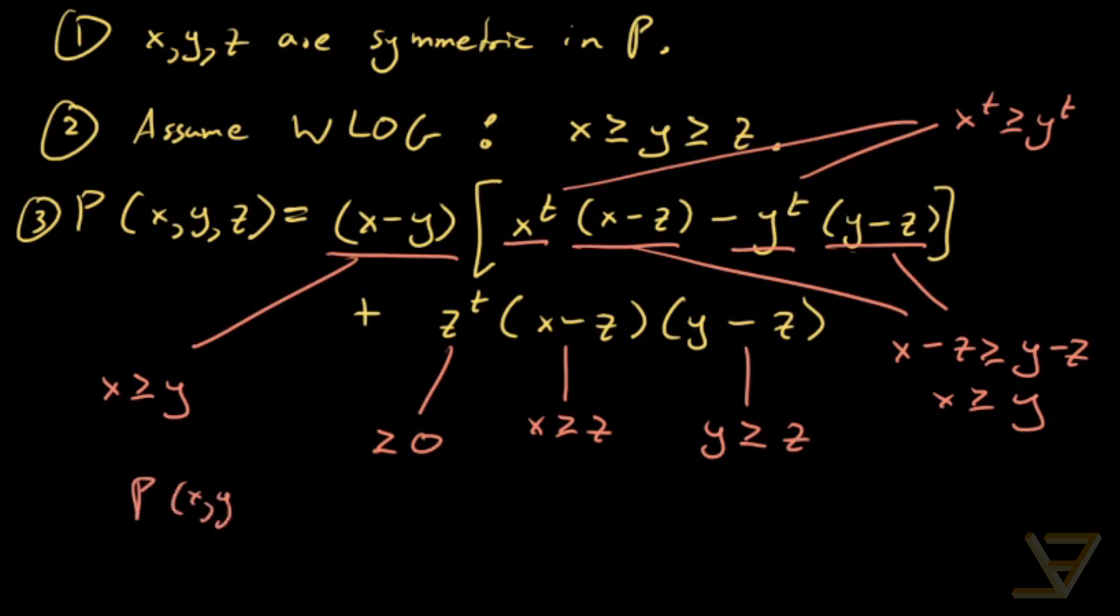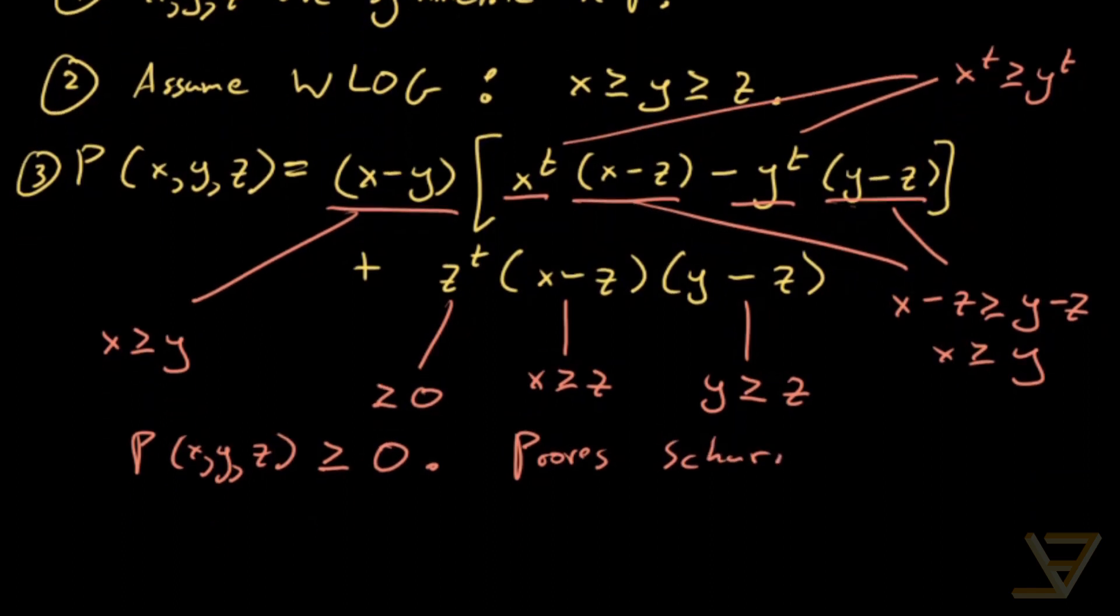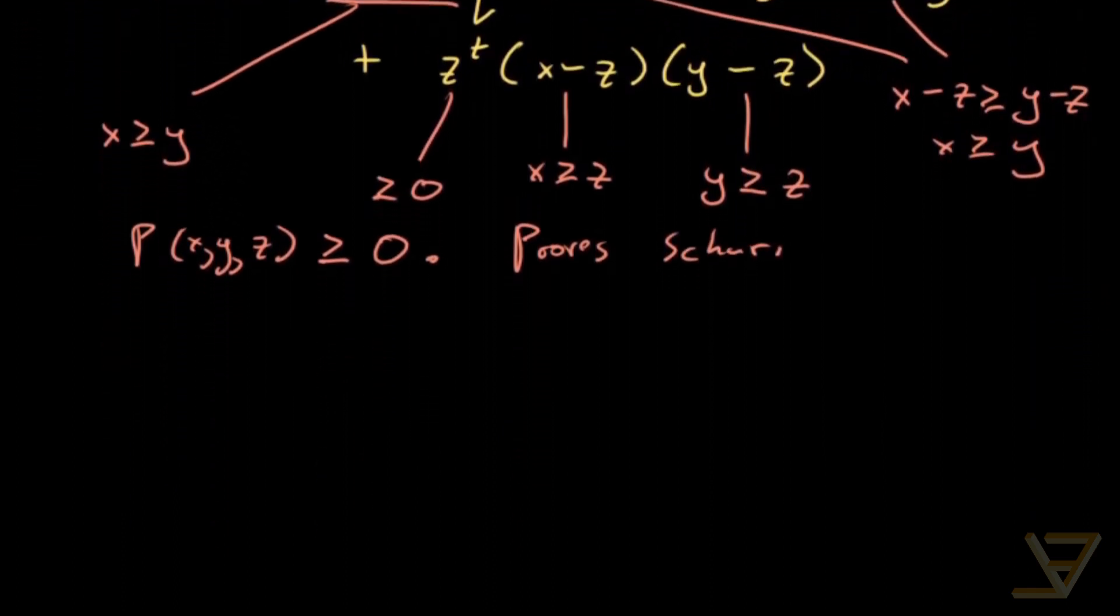P(x,y,z) ≥ 0, which proves Schur. So that completes the proof of Schur's inequality.